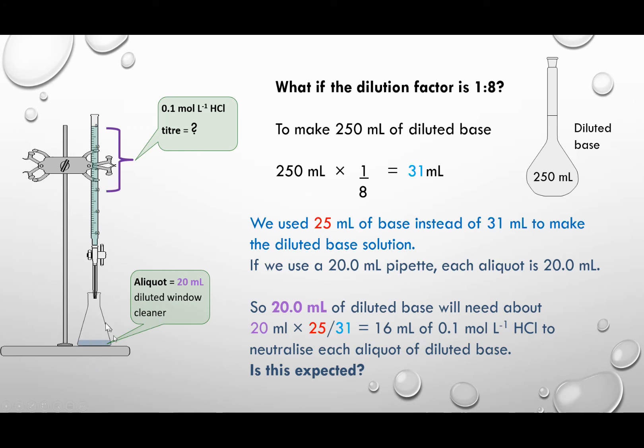Now, because our diluted base is less concentrated than 0.1, we can work it out by saying we used 25 mL of the concentrated base when we should have used 31, so we diluted, and multiplied by the actual aliquot value, which is 20 mL in this case. And that means we should then get a value of 16 milliliters, as expected, as a titer value.